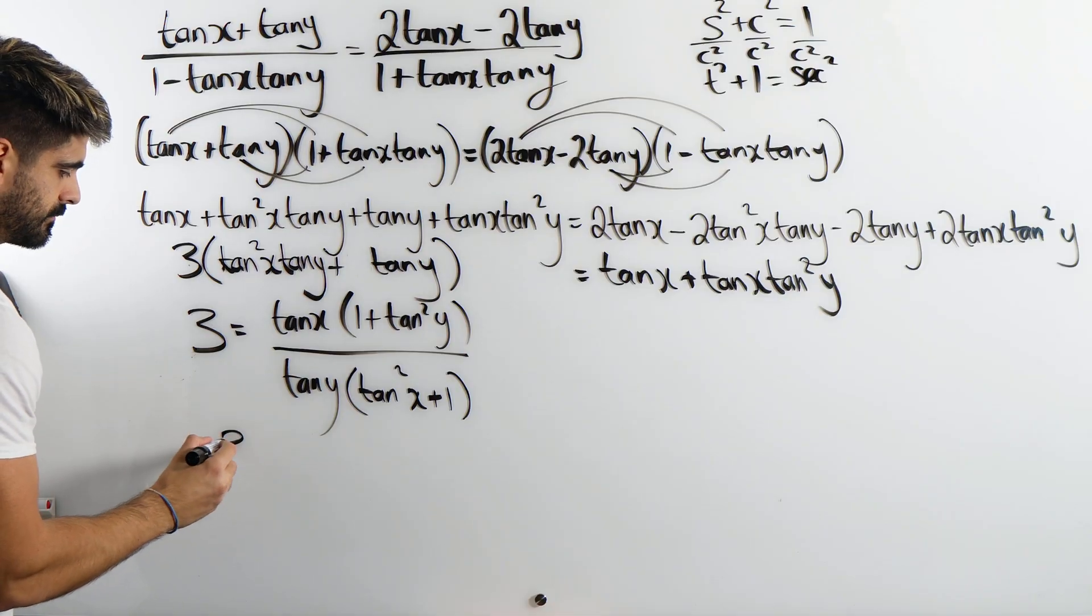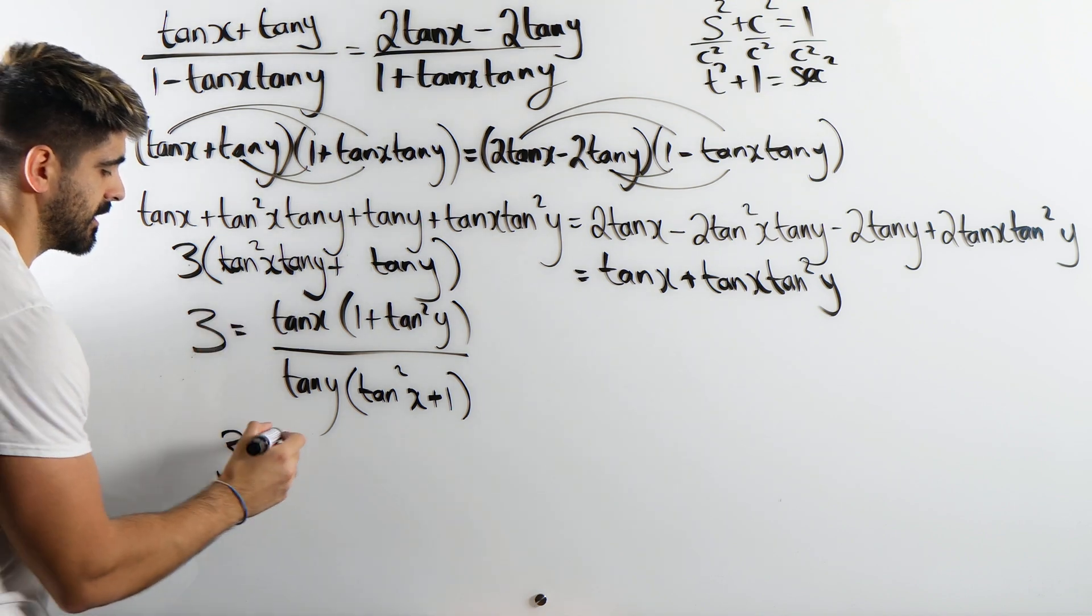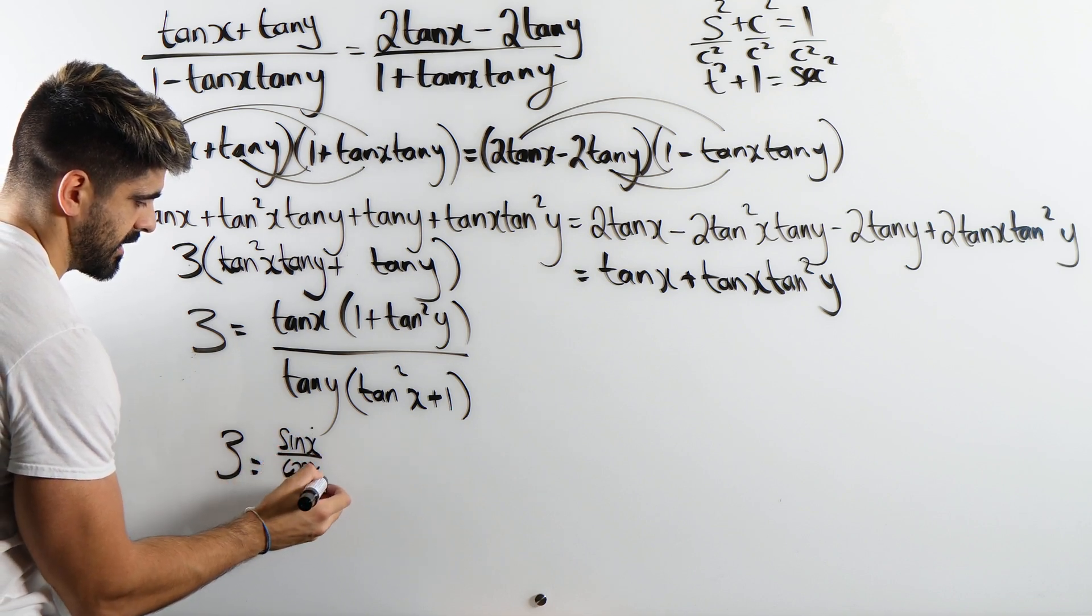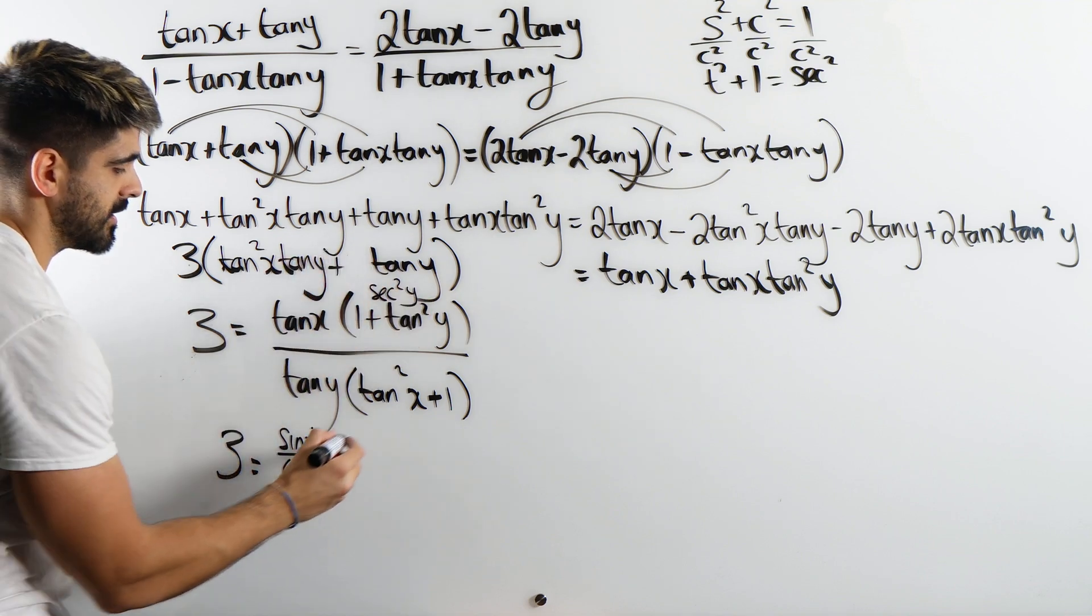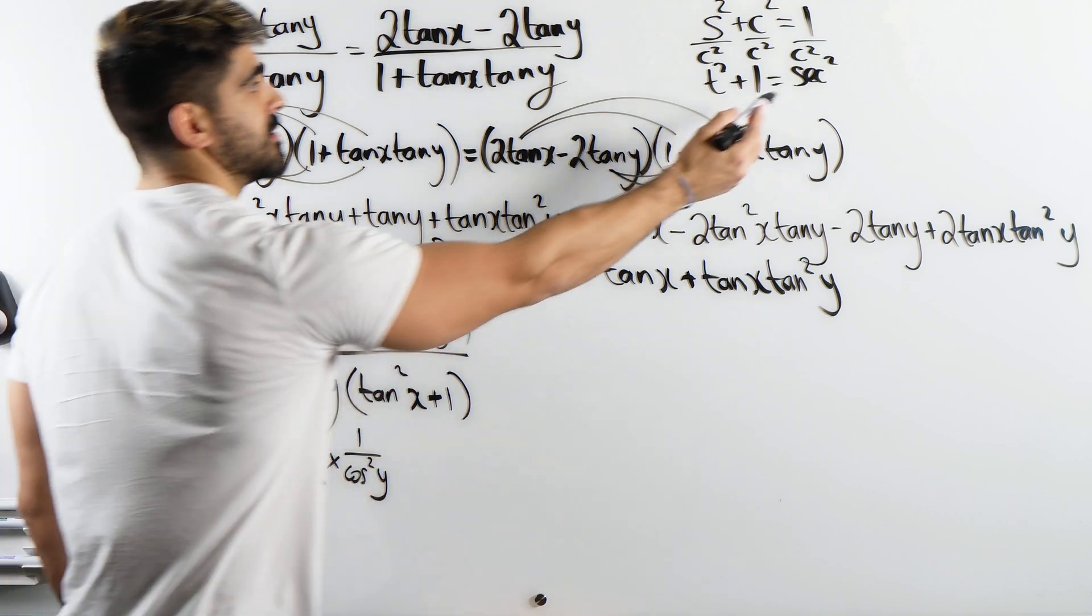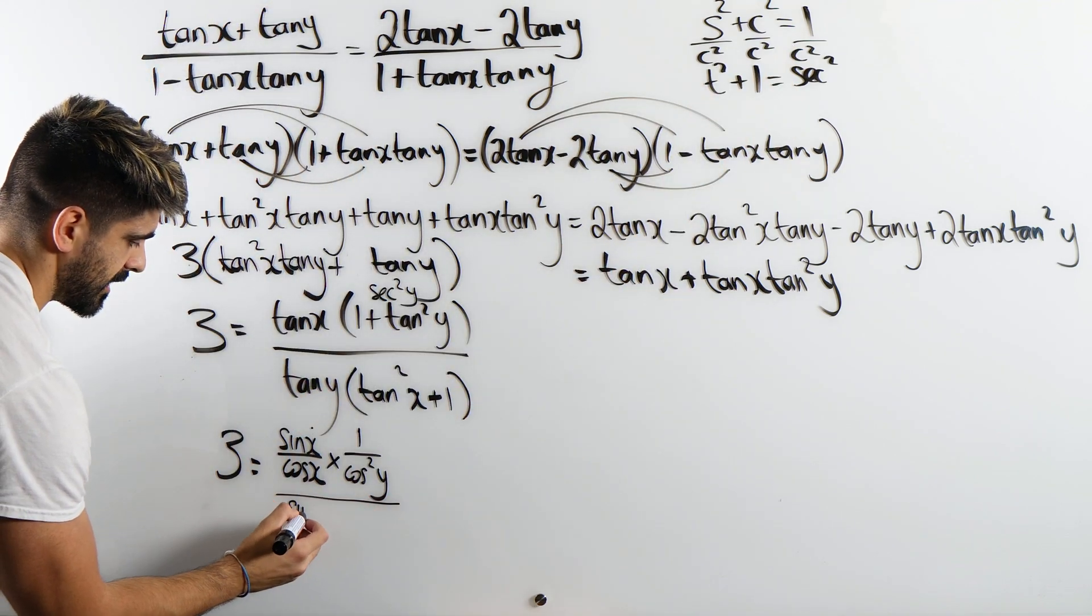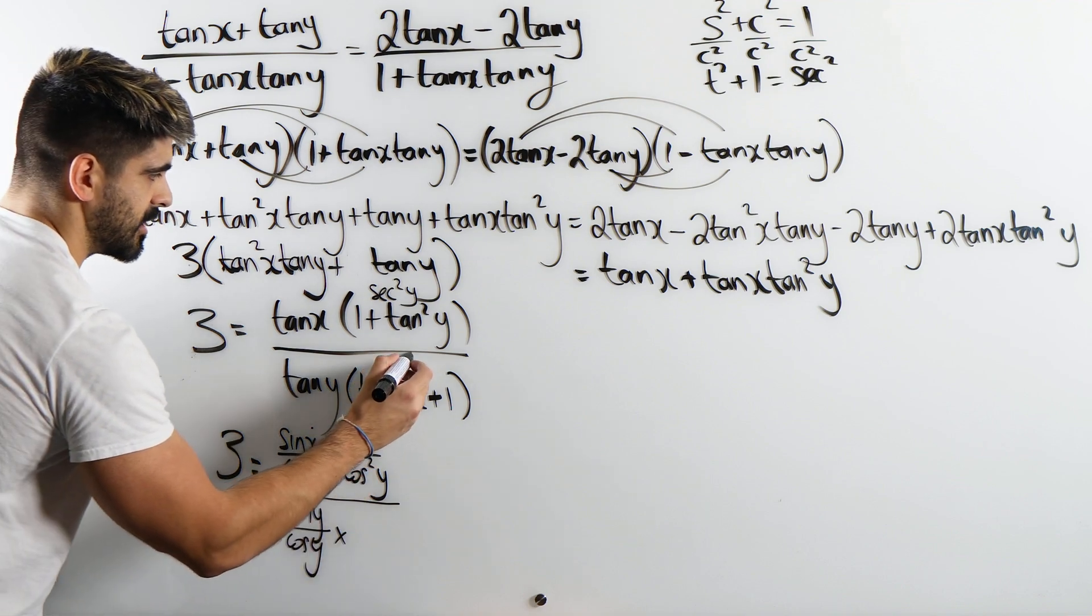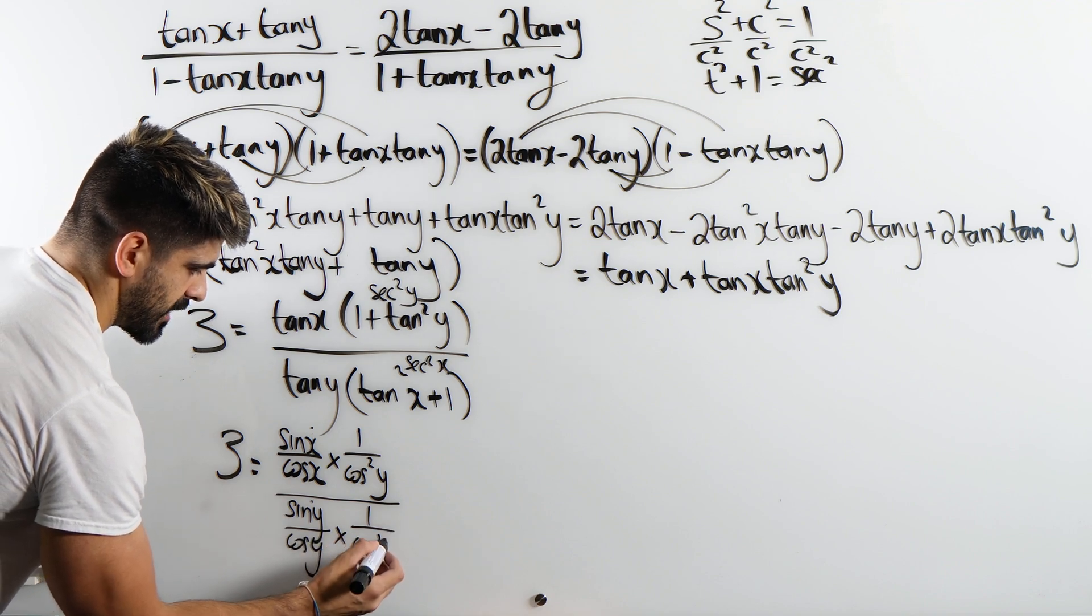So we got 3 is tan. Now here I'm going to start converting everything. So tan is sine x over cos x times 1 plus tan squared y is sec squared y, which is 1 over cos squared y. Divided by tan y, sine of y over cos of y times, remember that's going to be sec squared x, which is 1 over cos squared x.